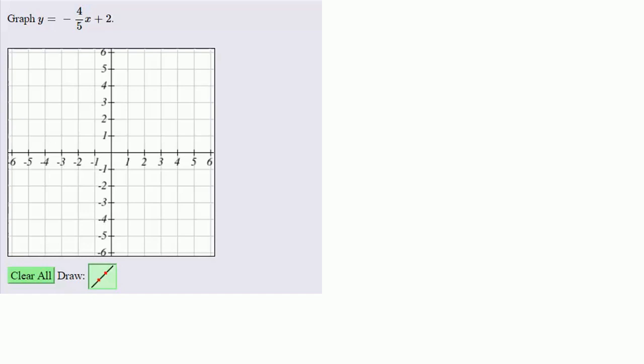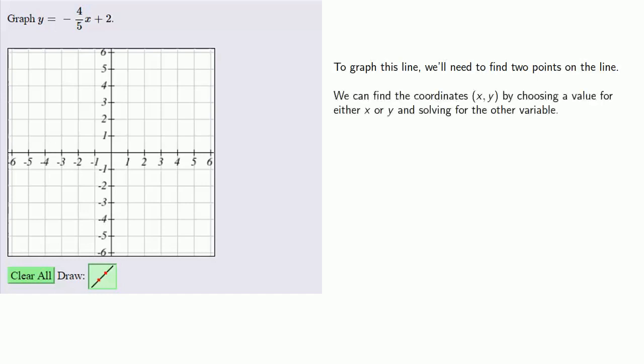So let's try and graph the equation y equals minus 4 fifths x plus 2. To graph this line, we'll need to find two points on the line. We can find the coordinates (x, y) by choosing a value for either x or y and solving for the other variable. Since this equation is already solved for y, we can choose a value of x and compute a value of y.